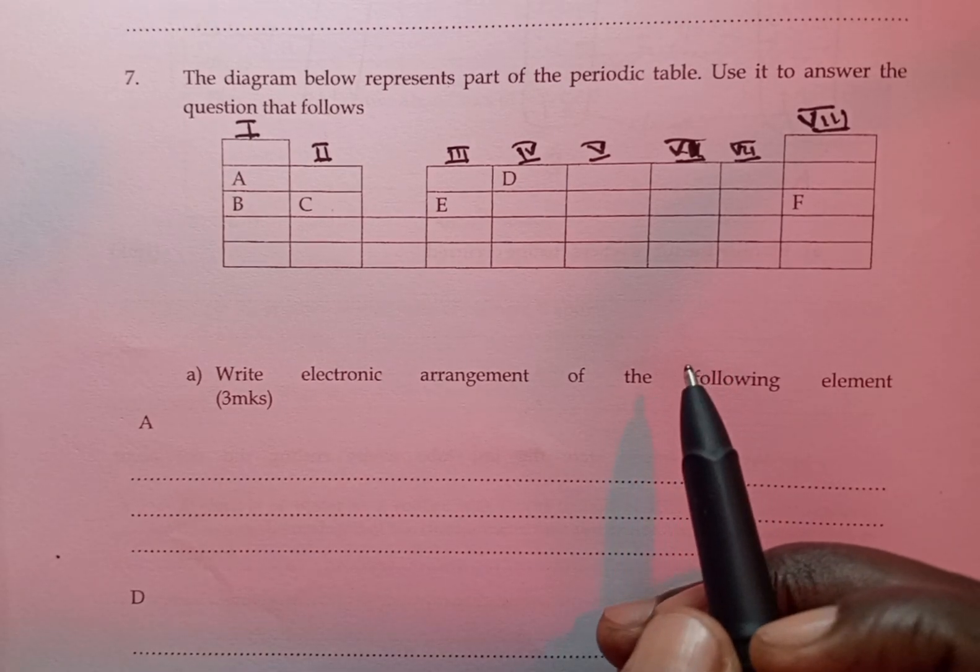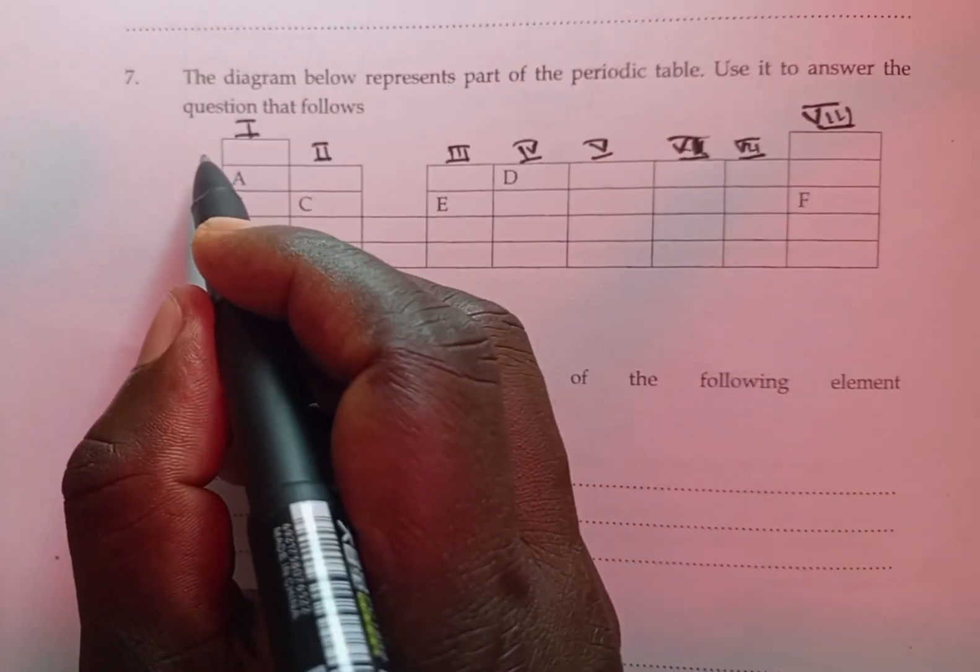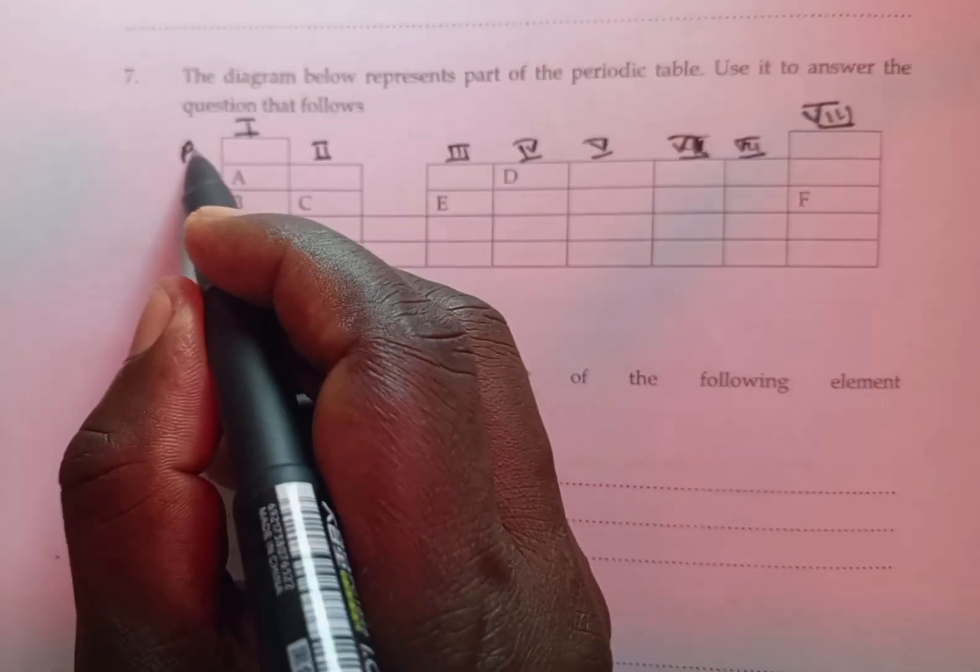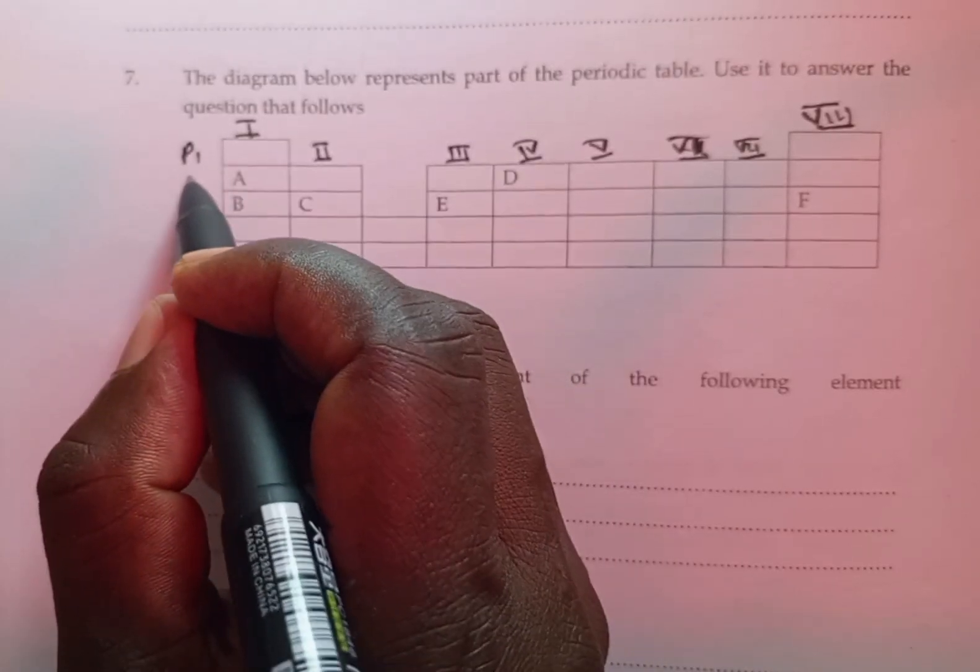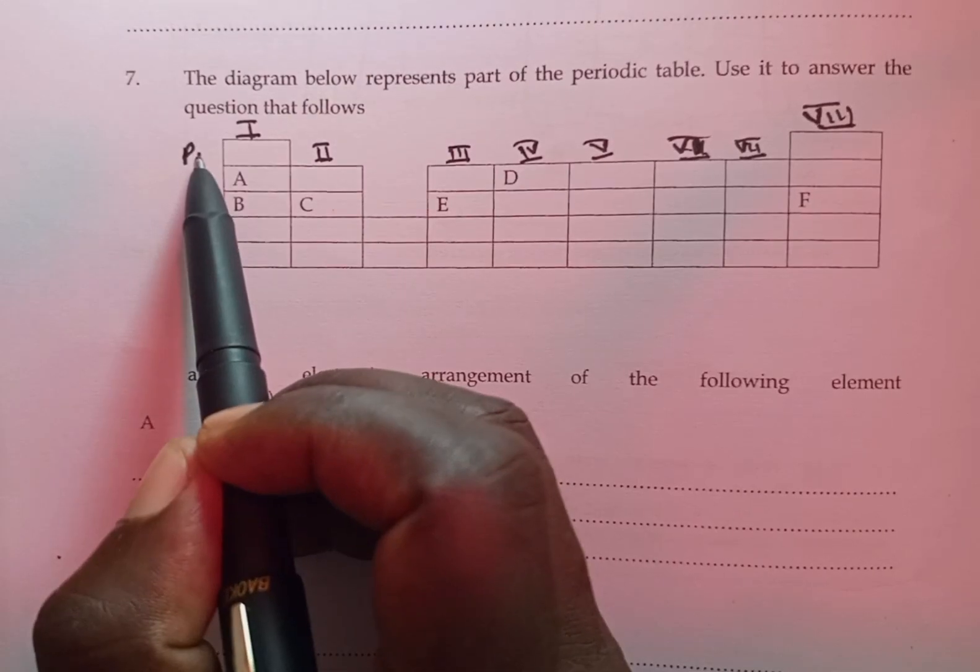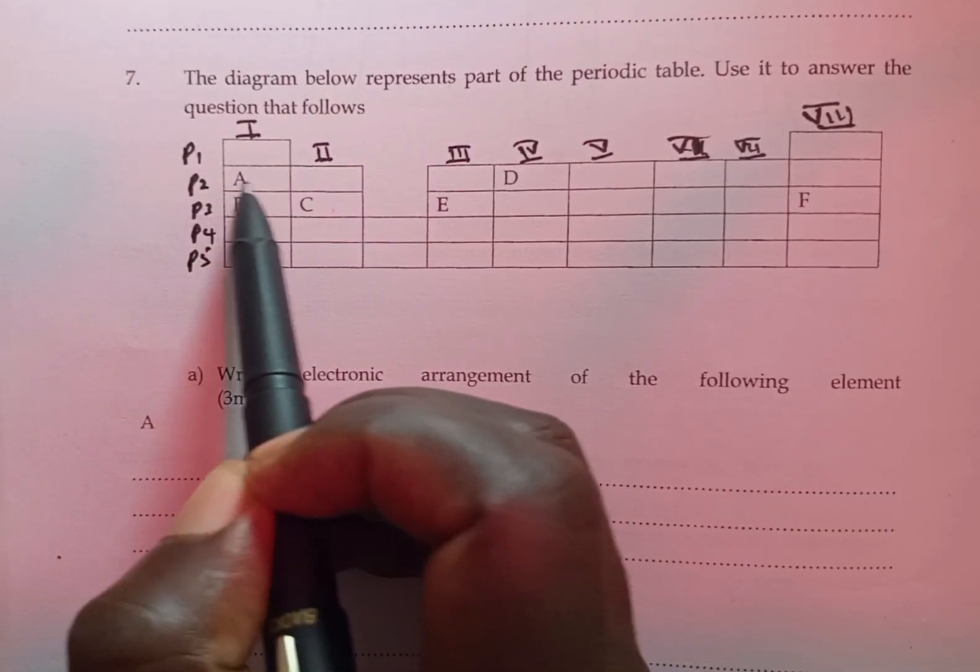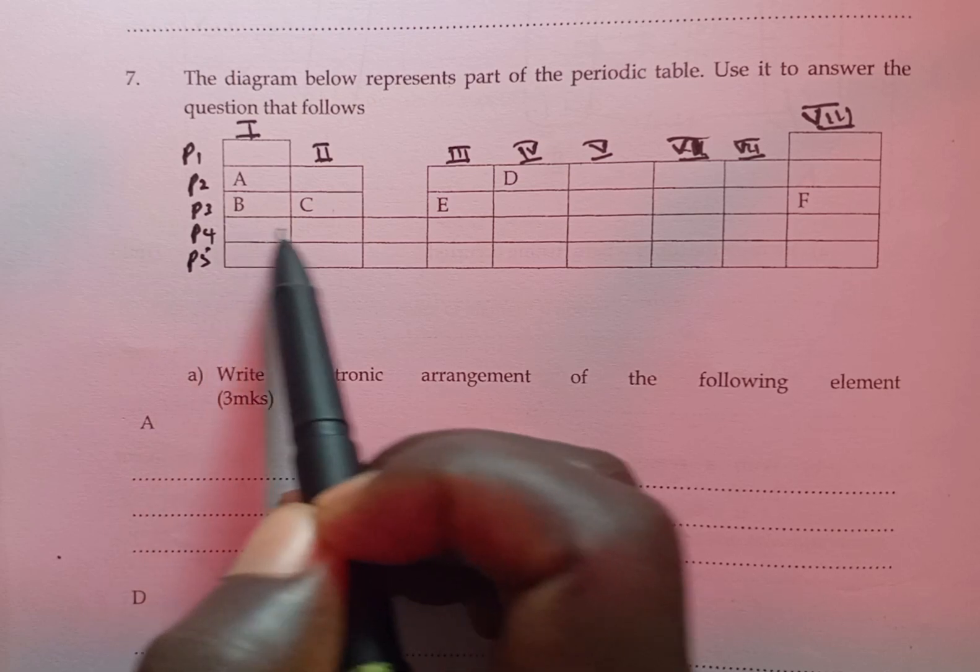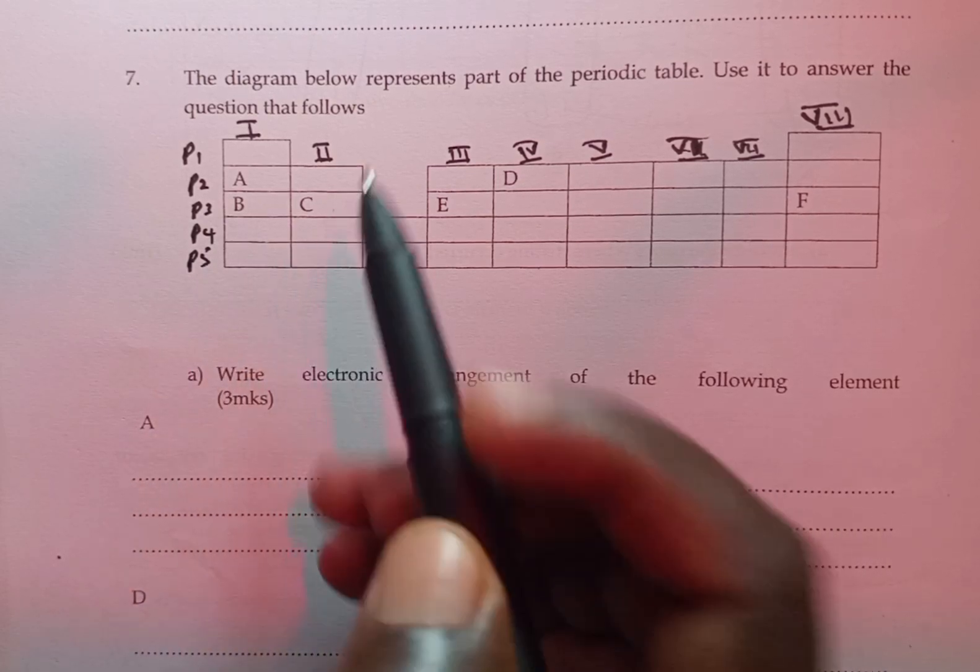Elements in the last column. We have period 1 in the first row, period 2 in the second. So period 1 is the first row, period 2 the second row, period 3 the third, period 4 the fourth, and period 5 the fifth.